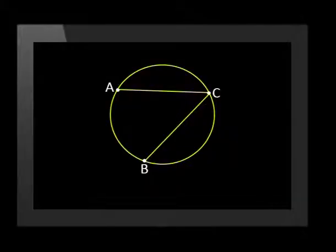We can now extend the concept of subtending to circles. Points A and B lie on the circumference of a circle. Angle C is opposite to arc AB. Therefore, we say arc AB subtends angle C.